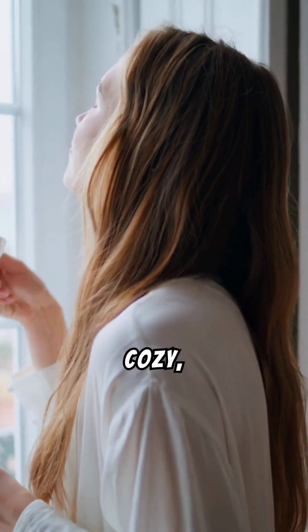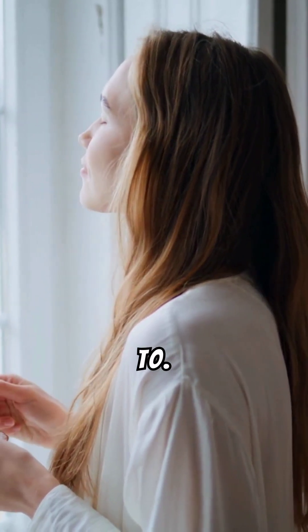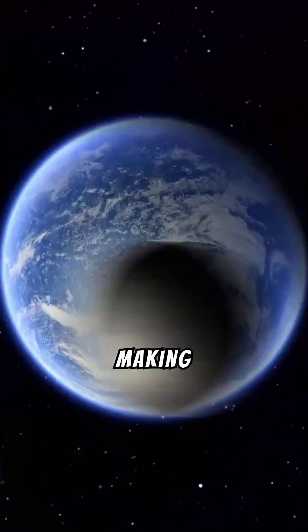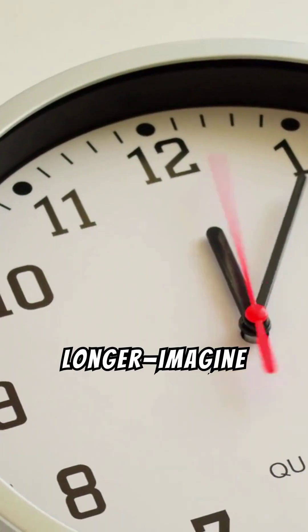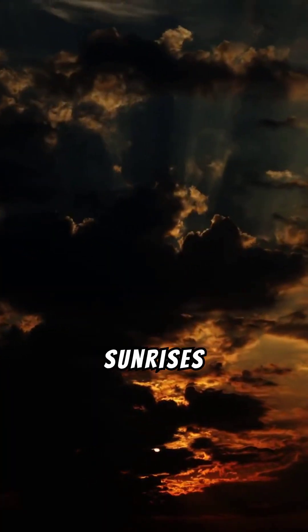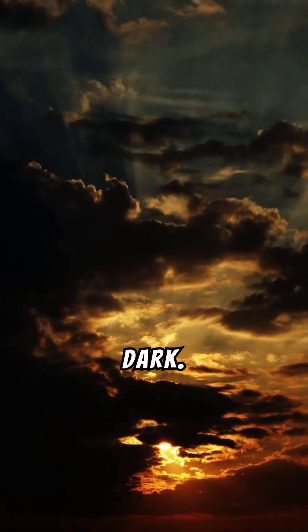Next, forget about the cozy 24-hour day we're used to. Earth's size would drastically change its rotation, probably making a day last much longer. Imagine 48 hours or even more. That means longer sunrises and sunsets, but also way more time in the dark.